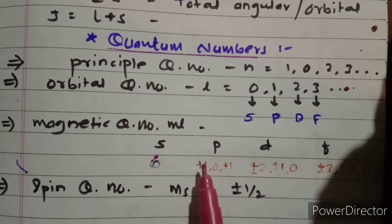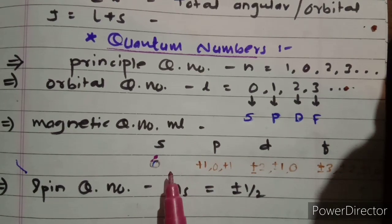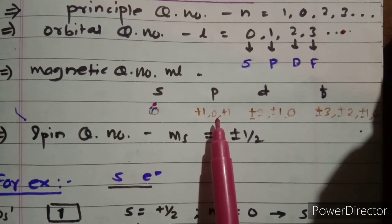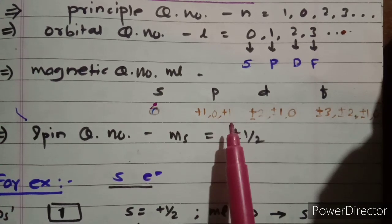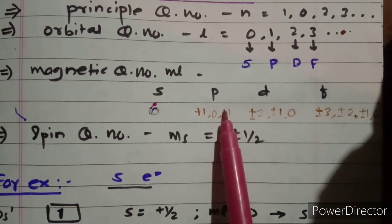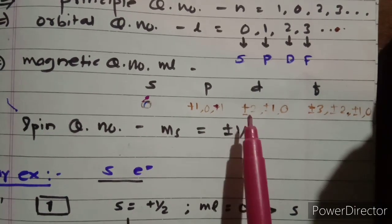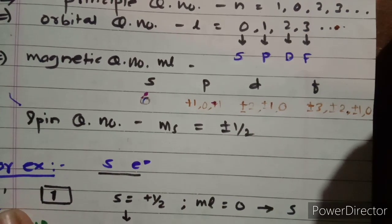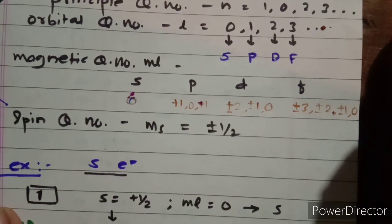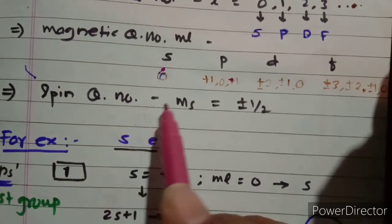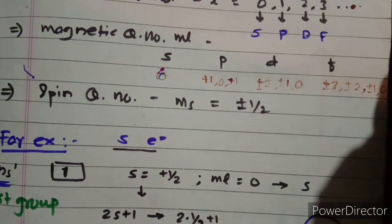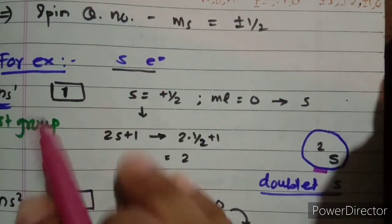Third is the magnetic quantum number ml, which decides the magnetic orientation with respect to the orbital. The s orbital always has ml = 0. The p orbitals are split into three — px, py, pz — so ml values go from +1 to −1. For d, values are from +2 to −2, and for f, values are from +3 to −3. Lastly, the spin quantum number is denoted by ms, which equals ±½.